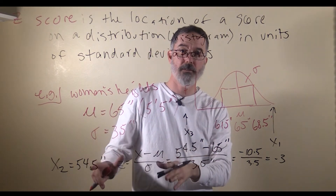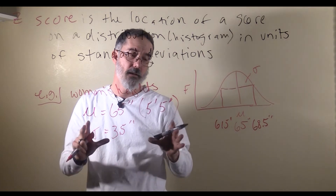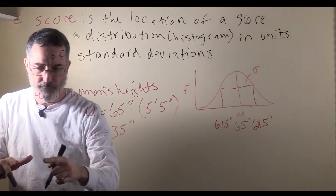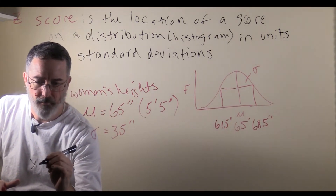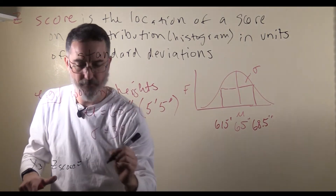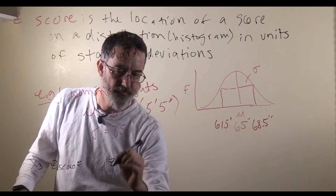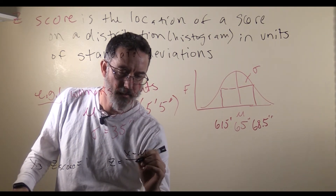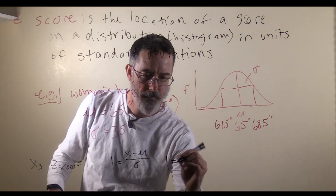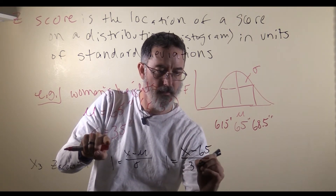That is how you transform raw scores into z-scores. Next, we are going to start with the z-score and go back to the raw score. We will keep working with women's heights. Woman x3 has a z-score of 1. We plug that into the formula: z equals the score minus the mean divided by the standard deviation. So 1 equals x minus 65, divided by 3.5.